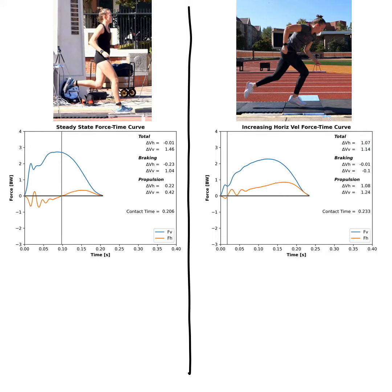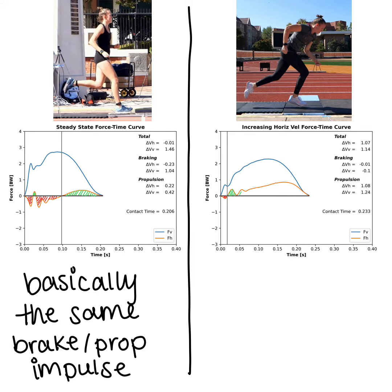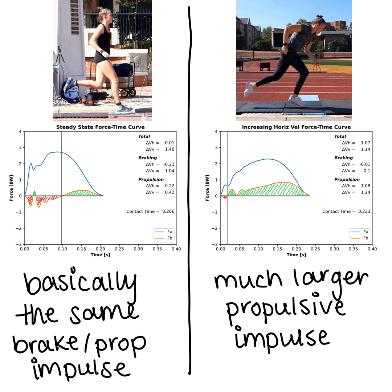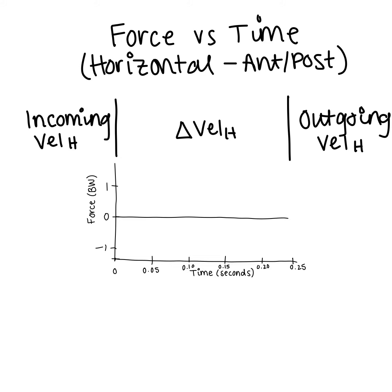To break down how this is happening, you can see that the area under the orange curve on the left side is basically equal for positive and negative, whereas on the right-hand side I have a lot more propulsive force — more positive force acting in the direction that I'm trying to run. So we can increase our horizontal velocity if our propulsive impulse is larger than our braking impulse, and we can stay the same if braking and propulsion are approximately equal.